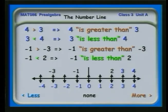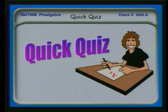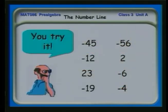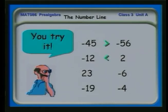Minus one is less than two — again, minus one is to the left of two on the number line. Are you ready to try it? Minus 45 is greater than minus 56. Minus 12 is less than two. 23 is greater than minus six. And minus 19 is less than minus four.